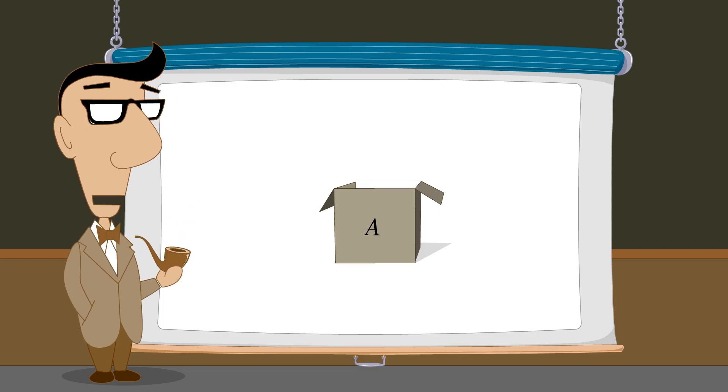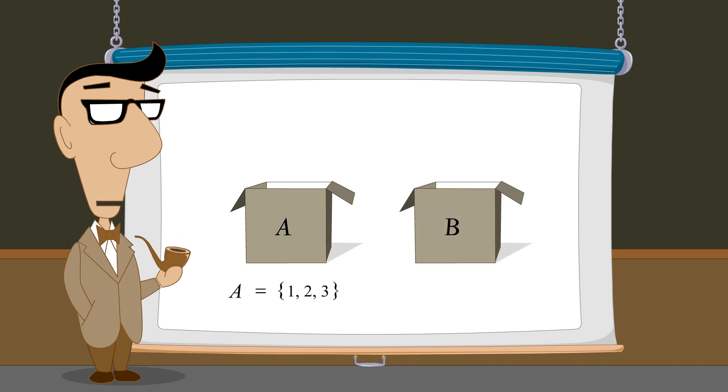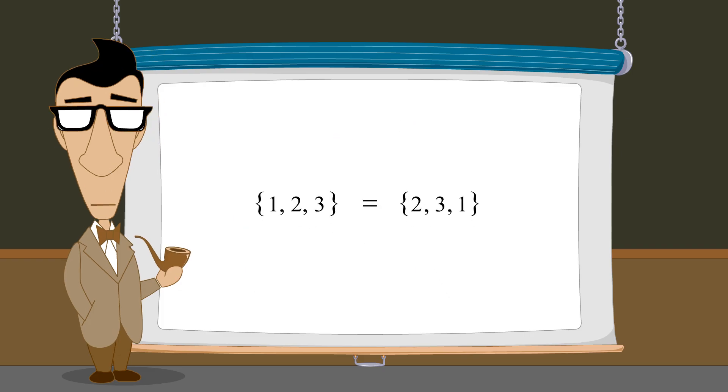One such relation is equality. If two sets contain exactly the same elements, they are said to be equal. For example, set A, which consists of the elements 1, 2, and 3, and set B, consisting of the elements 2, 3, and 1 are equal, since they both contain the same elements. Notice that it doesn't matter that their elements are listed in different orders.